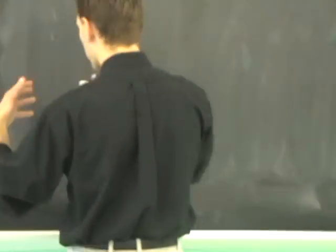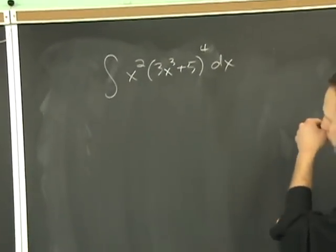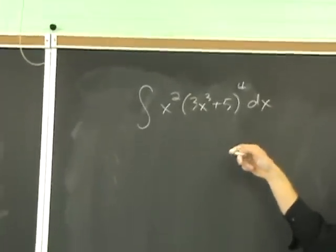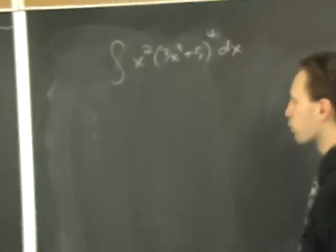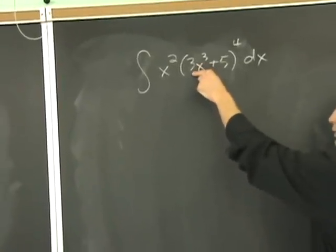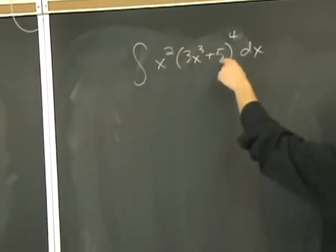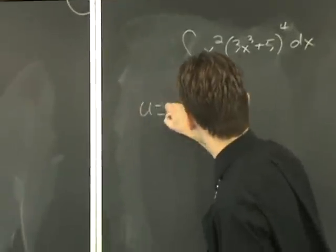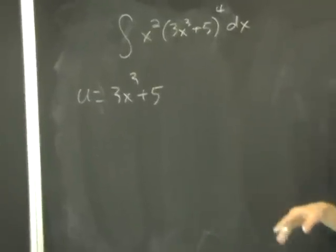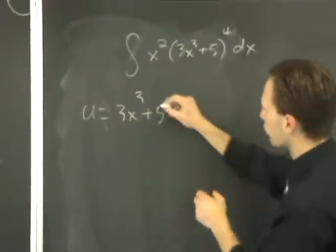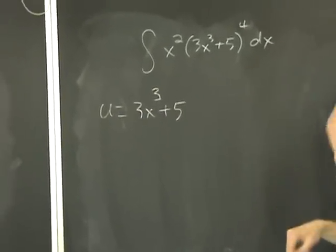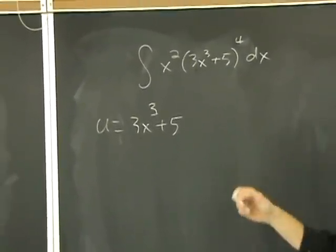So it doesn't have to be an exact match — you want to look for something whose derivative is also in there in some form. Third problem: what could we make u? Well, we could go with x cubed because its derivative is x squared on the front. That would work, but the best way to do it is to make u equal to 3x cubed. That's pretty much the same as making u equal x cubed. And if you grab the 5 too, it's even better — u equals 3x cubed plus 5.